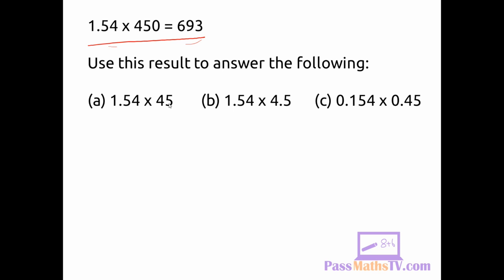First, we have 1.54 times 45. 1.54 is the same as this number here, but 45 is 10 times smaller than 450. So we're multiplying 1.54 by a number that's 10 times smaller than this. Therefore, our answer should be 10 times smaller than 693, that means our answer is 69.3.